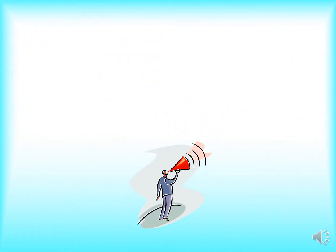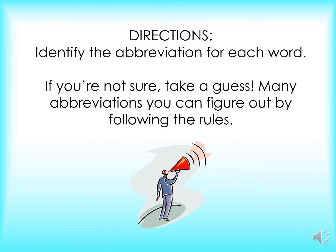Now we are going to have an activity wherein you will have to identify the abbreviation for each word. If you are not sure, take a guess. Many abbreviations you can figure out by following the rules. Remember, most abbreviations begin with a capital letter and end with a period. Some abbreviations use the first letter of each word, and other abbreviations use the first few letters of the full word.